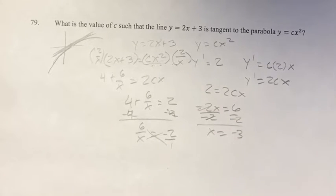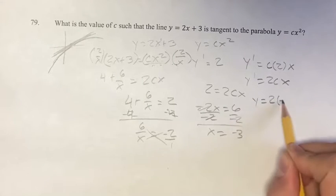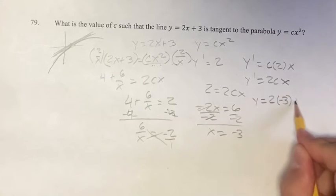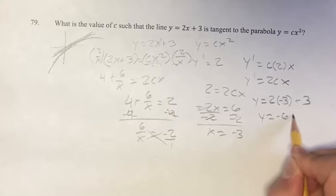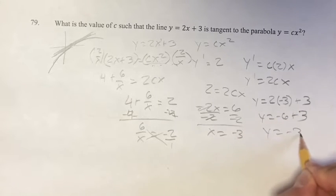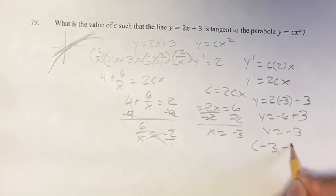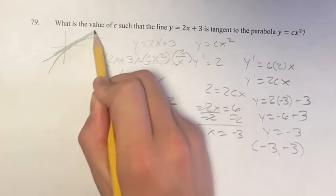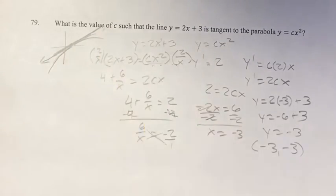At least, it's the x value. If you want to find the y value, you can just plug in -3 for x into the line. You get -6 + 3, which is -3. So the point (-3, -3) is the intersection point at this tangent.